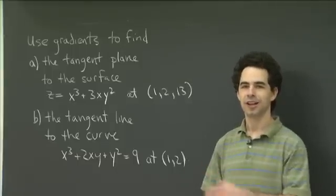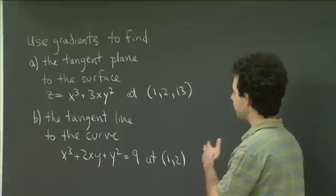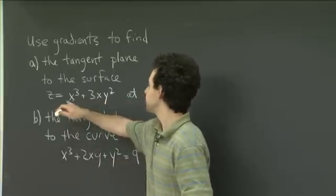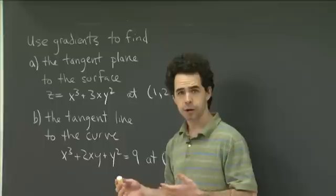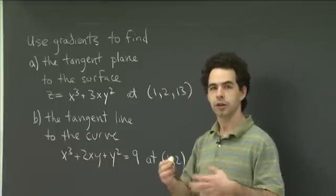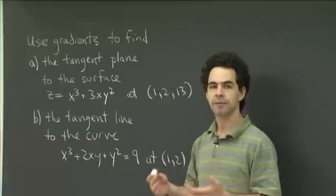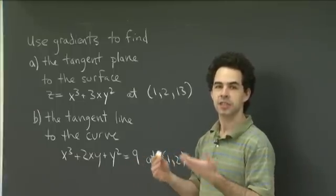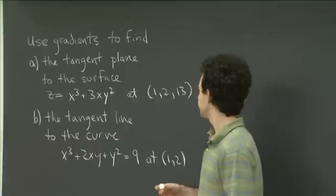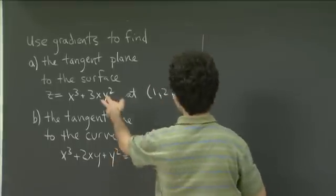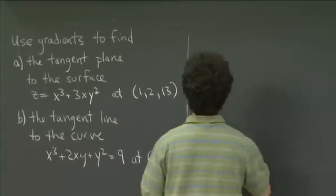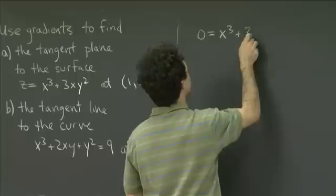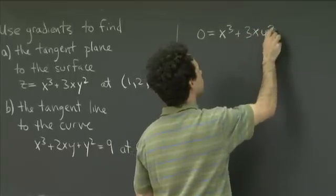So hopefully you had some good luck working on these problems. Let's take a look at them. For part A, you're given a function in the usual form that we use to graph it, which is z equals a function of x and y. But in order to apply this gradient method, what we really want is to look at this surface as if it were a level surface of some function of three variables. So we want to bring the x, y, and z all together on the same side with just a 0 or a constant on the other side. So I'm going to rewrite the defining equation of this surface as 0 equals x cubed plus 3xy squared minus z.